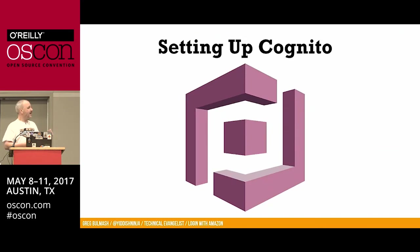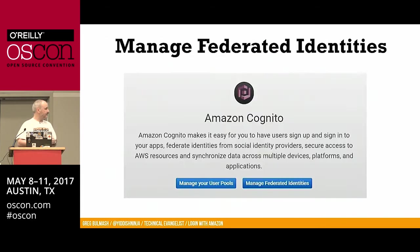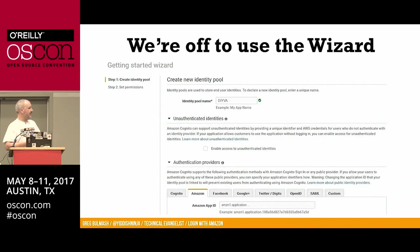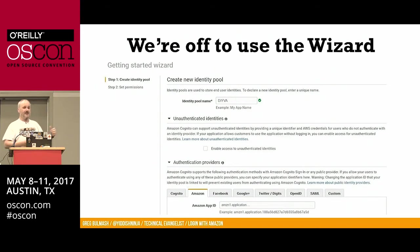Now we're going to set up Cognito. We go into the AWS console, then into Cognito. Manage your federated identities and create an identity pool. Name it Diva — we won't do unauthenticated — and we're going to set up Amazon as an authentication provider. That security profile ID you just copied, you'll paste it in as the Amazon App ID so Cognito can take that security profile ID and validate.